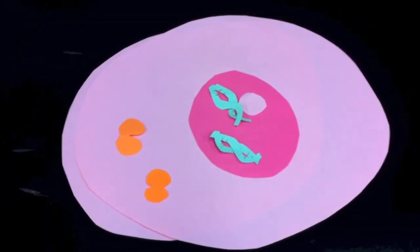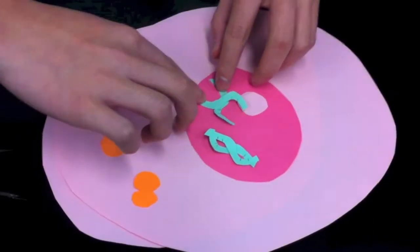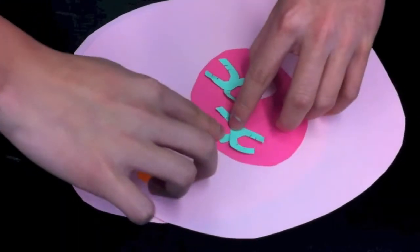The cell then undergoes continued growth and preparation, with the DNA in a loosely coiled form. Proteins continue to be made, such as those in preparation for cytokinesis.